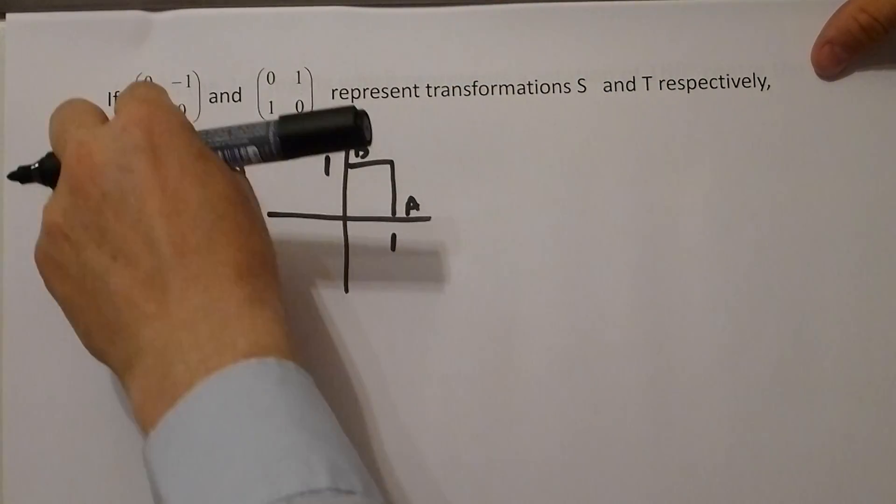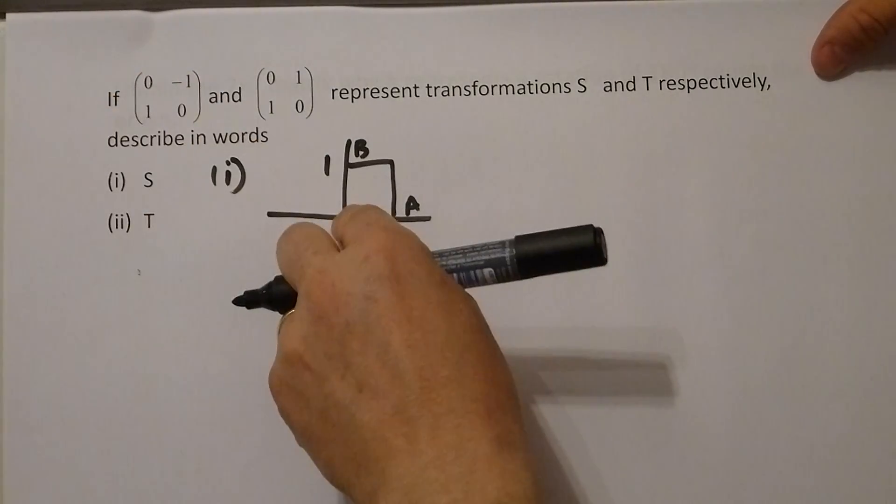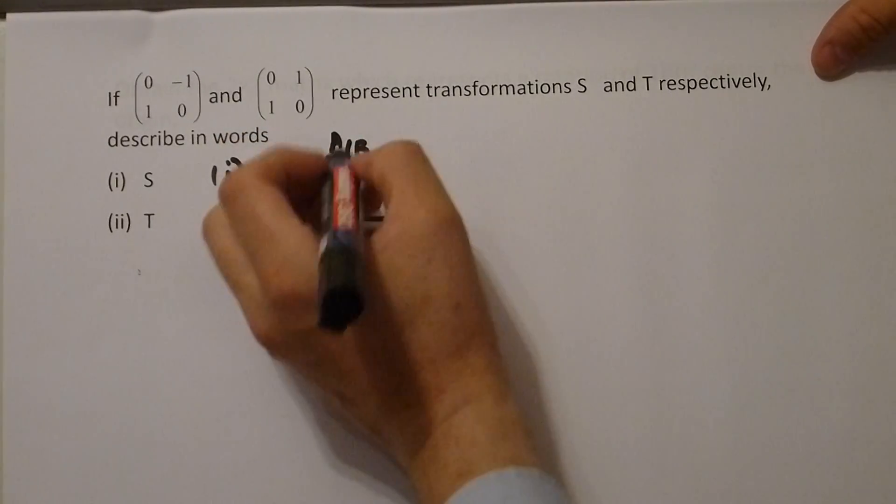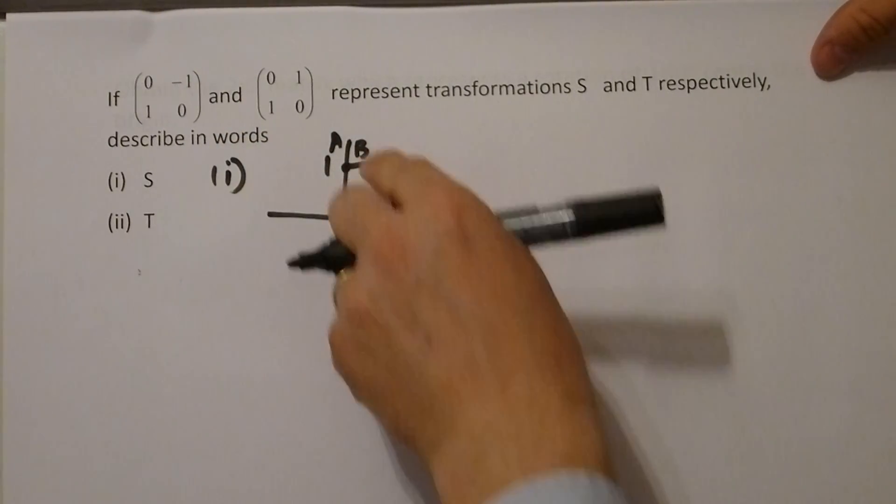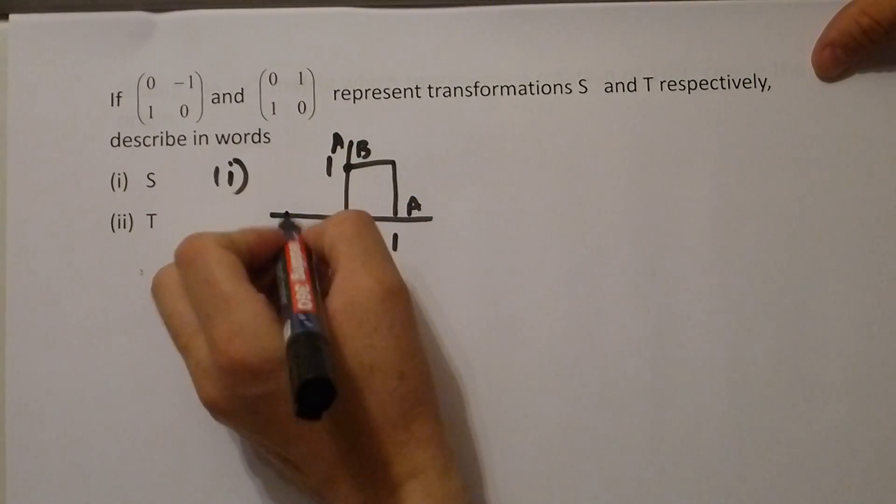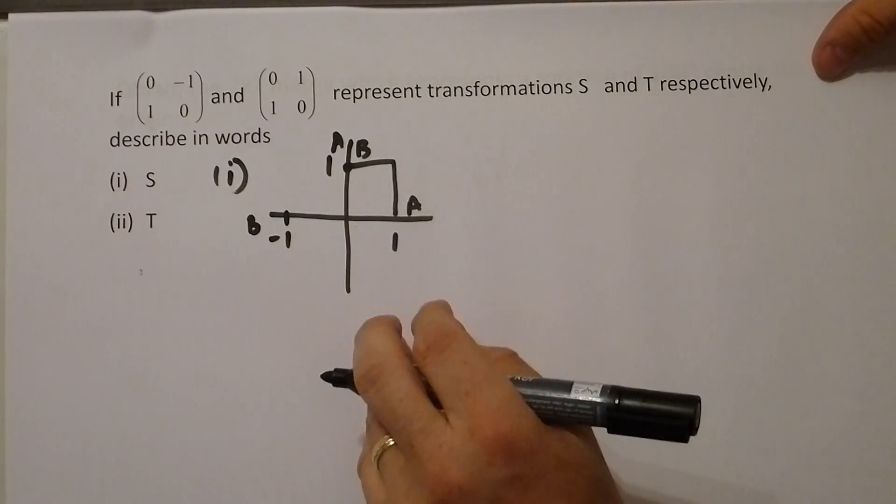A moves, in the case of the first one, to 0,1 and 0,1 is there. So A moves up there, to that point there. B has moved to minus 1,0 and minus 1,0 is here, so B has moved to there.